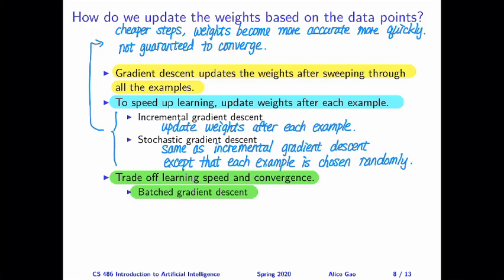On one extreme, if the batch only contains one example, this is exactly the same as incremental gradient descent. On the other extreme, if the batch is equal to the entire training set, then that's the same as the original gradient descent.